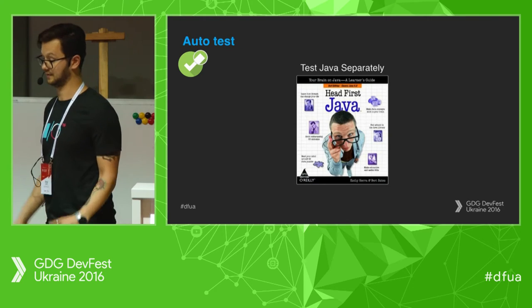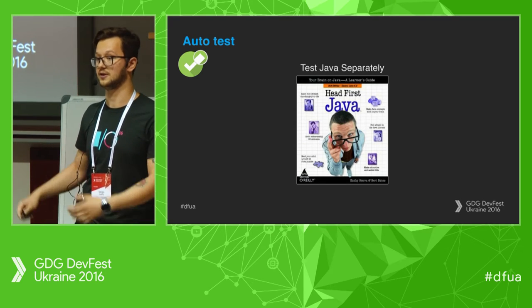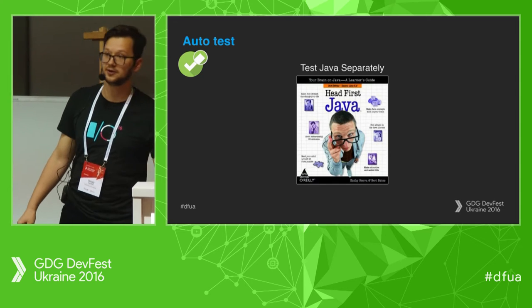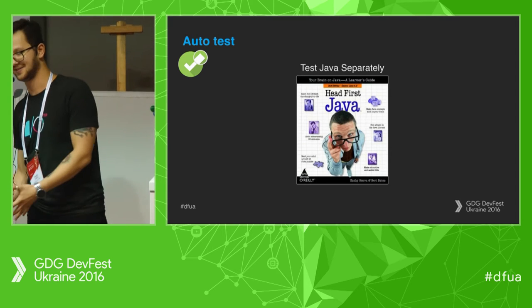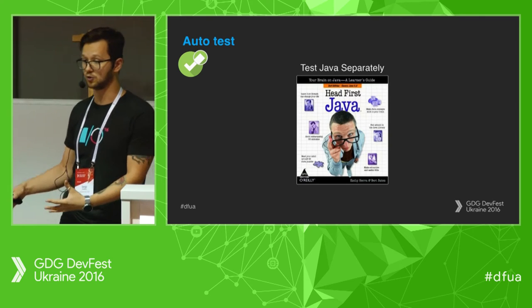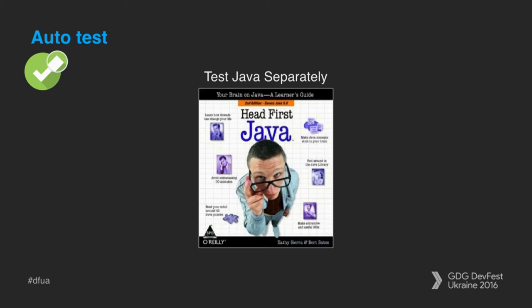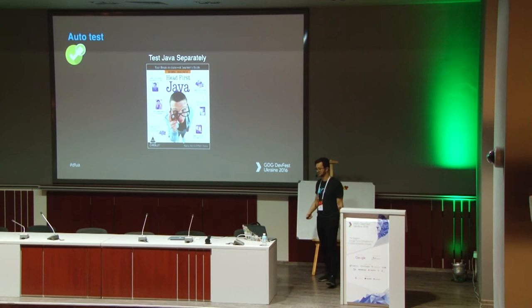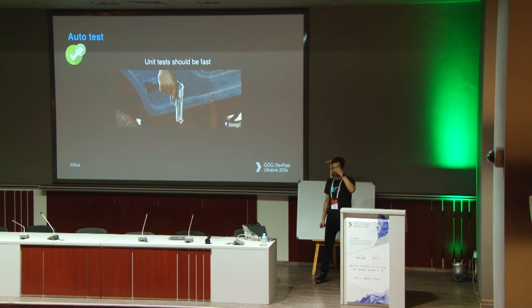Regarding testing, there are a lot of patterns discussed at this conference — MVP, VIPER, MVVM. The main idea for me is to make your code testable, which means separating your Java code from Android dependencies. This makes your unit tests faster — you test your Java code separately without starting the Android virtual machine.